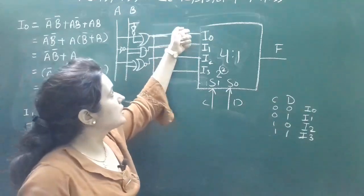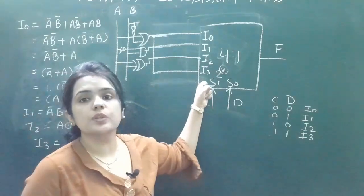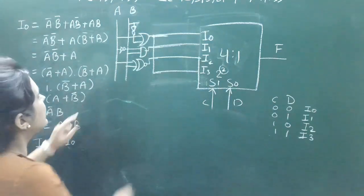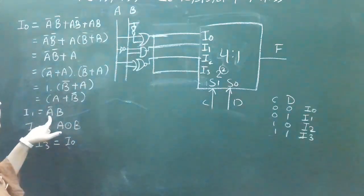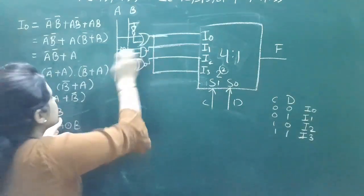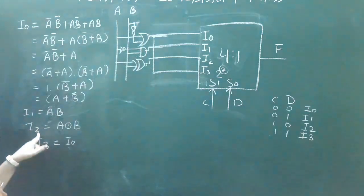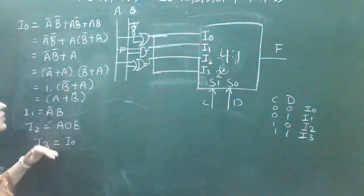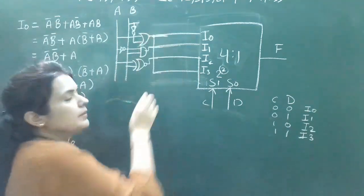I3 equals I0 simplified, which is A OR B'. Now the connections to the 4-to-1 multiplexer input lines are: I0 connected to A OR B' (through an OR gate), I1 connected to A' AND B (through an AND gate), I2 connected to A XNOR B, and I3 also connected to A OR B'. C and D remain the selection lines.